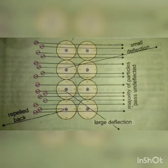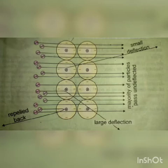Ab in teeno observations ki base pe Rutherford ne apne conclusions diye, aur jaise bataya, plum pudding model ko Rutherford ne incorrect — galat — kaha. Unhone in observations ki base pe atom ka structure bhi diya. Ye conclusions hum next class mein parhenge. That's all for today, Allah Hafiz, thank you.